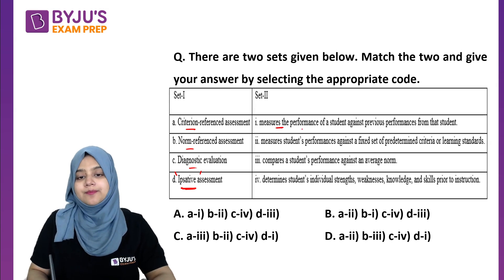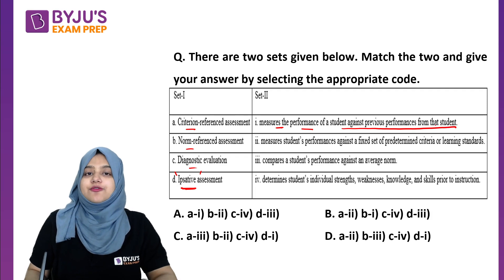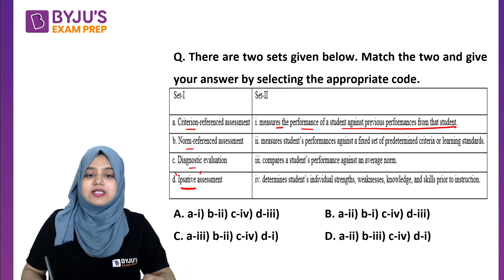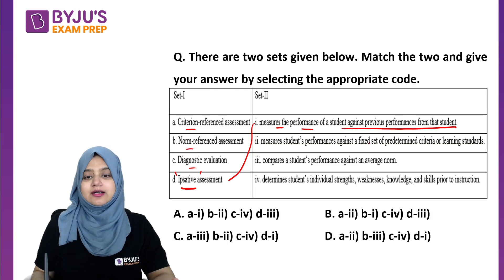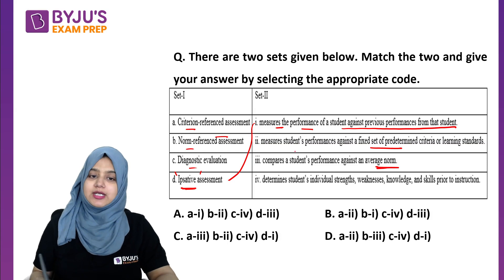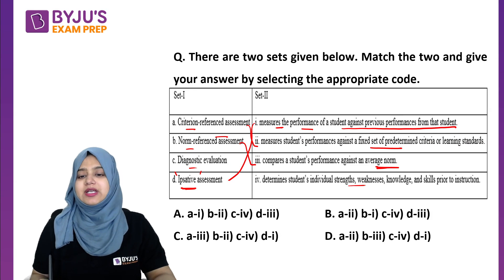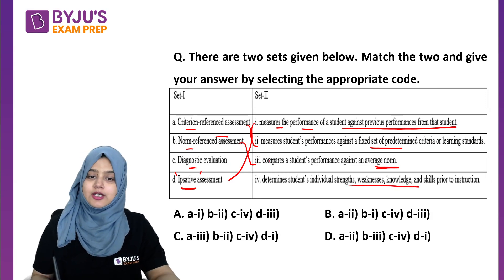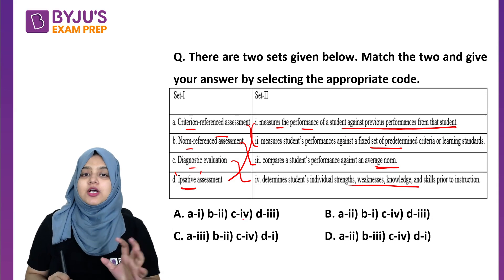Yahan pe aap dekh sakte hain option number one: 'measures the performance of a student against the previous performance from that student' — so this is definitely ipsative evaluation. Criterion mein standards hote hain, so here you have standards. Norm mein aapki comparison hoti hai group ke saath. Diagnostic mein hum weakness aur strength ka pata lagate hain, so diagnostic ka hoga option number four.